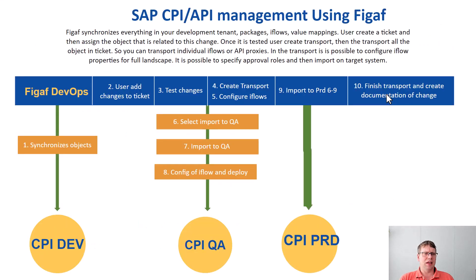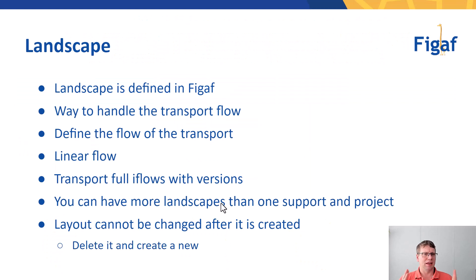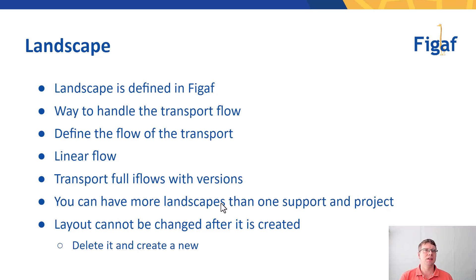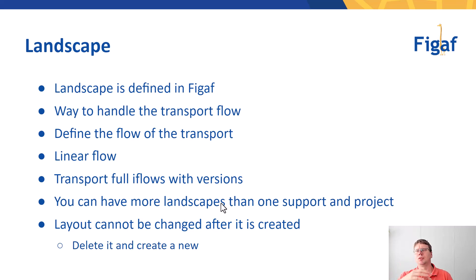We did a change some time ago where we had one landscape that covered the full cycle. Now we have two landscapes: one that covers dev to QA and one that covers QA to production. This gives you more ability to document what's going on and see the changes happening. A landscape is defined in the figaf tool. We're using our own transport mechanism, so you do not need to set up any of SAP's transport mechanisms. It allows you to handle the full transport flow, and it's a linear flow — moving from dev to QA, from QA to production.